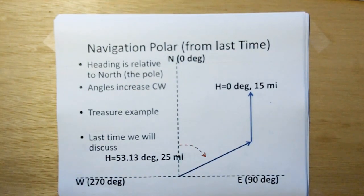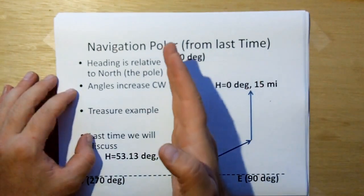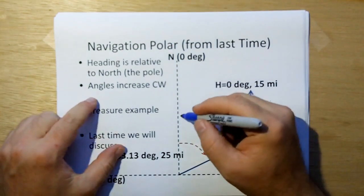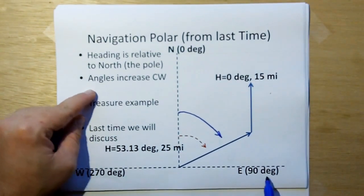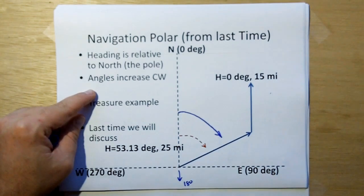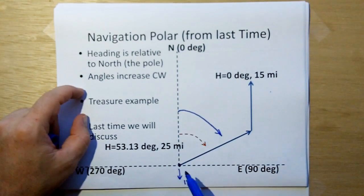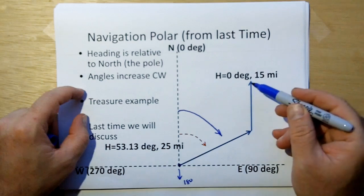What we showed in the last video is how navigation systems use vectors. They describe their direction as a heading which is relative to north, and the angles in degrees increment going clockwise, such that east is 90 degrees, south is 180 degrees, west is 270 degrees. For example, if a ship is leaving port, they may take a heading of 53 degrees for 25 miles and then a heading of zero degrees for 15 miles.